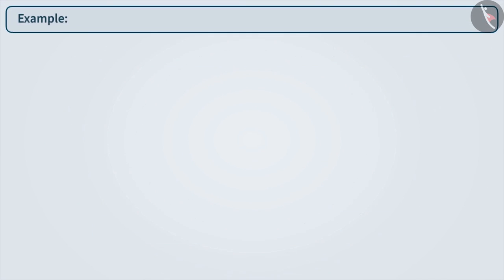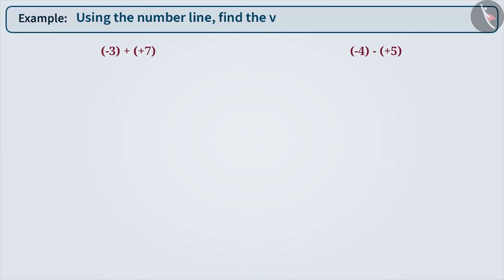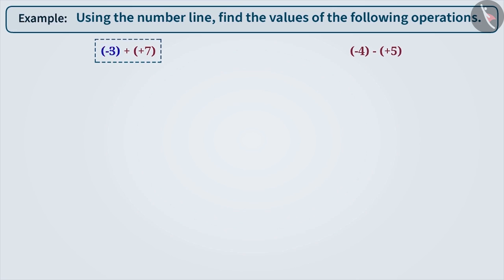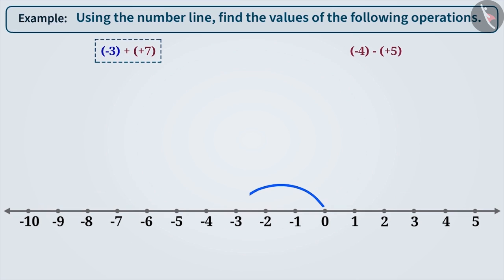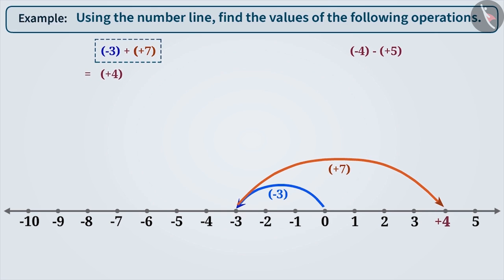Using the number line, find the values of the following operations. In minus 3 plus plus 7, the first number is minus 3. Therefore, we move 3 steps towards the left from 0 on the number line. Since plus 7 is a positive integer, we move 7 steps towards the right from minus 3. Thus, we reach plus 4, which is the result of minus 3 plus plus 7.